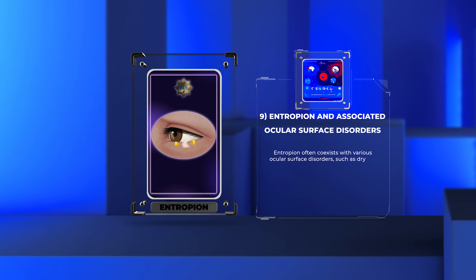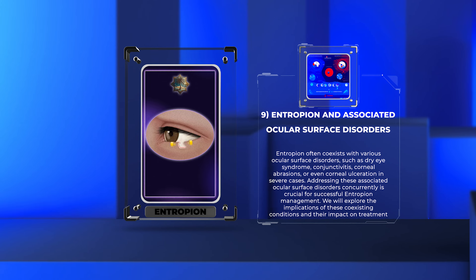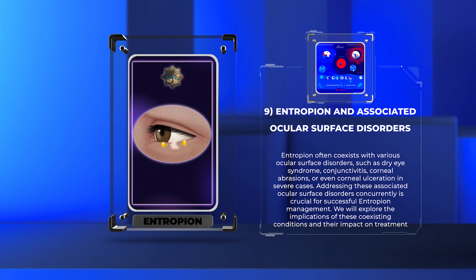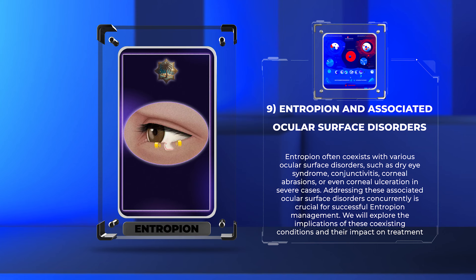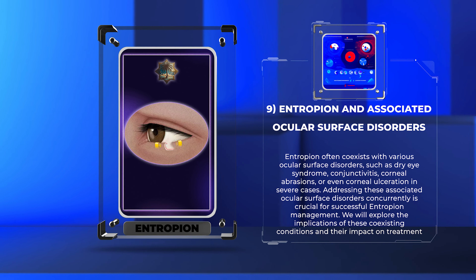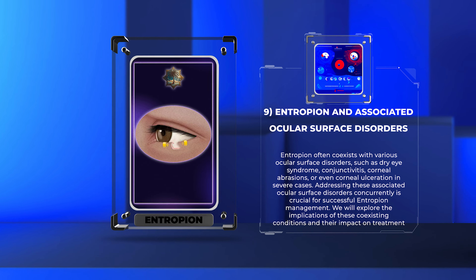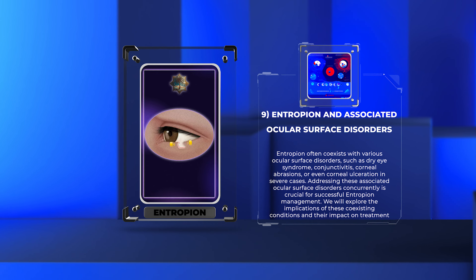Entropion often coexists with various ocular surface disorders, such as dry eye syndrome, conjunctivitis, corneal abrasions, or even corneal ulceration in severe cases. Addressing these associated ocular surface disorders concurrently is crucial for successful entropion management. We will explore the implications of these coexisting conditions and their impact on treatment decisions.